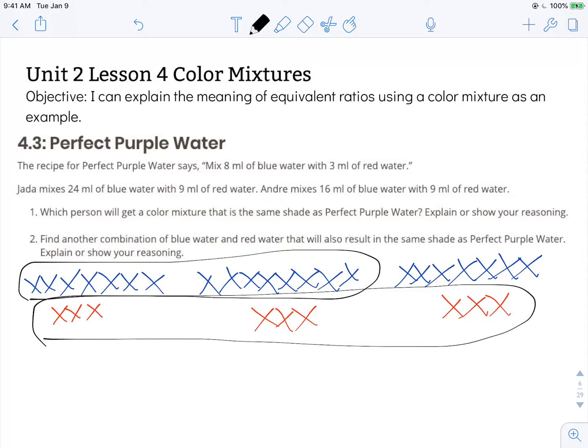Number one says which person will get a color mixture that is the same shade as perfect purple water. So what we see is that Jada will get that same shade because she just made three times as much in the exact same ratio. So she tripled the amount of blue and she tripled the amount of red that went into the recipe. So 8 times 3 and 3 times 3 to get 24 and 9.